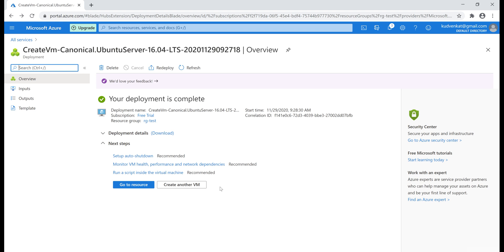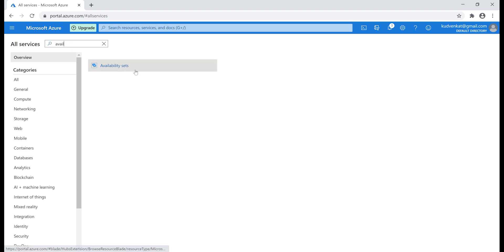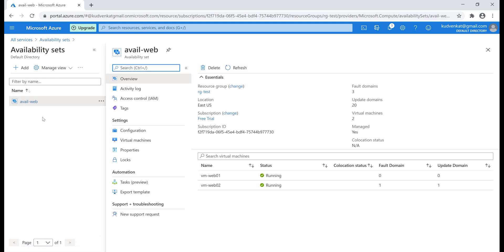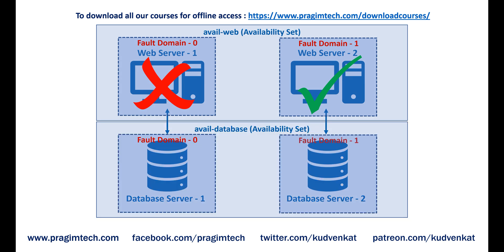Let's go to All Services and search for availability sets. If we go to our availability set, notice that both web servers are assigned different fault domains and update domains. If there is a problem in one fault domain or update domain, only one of our web servers will be down and we still have the other web server up and running. We can do the same for our database servers — create a separate availability set named avail-database, place both database servers in it, so they get their own fault domains and update domains. If a problem occurs in one fault domain or update domain, only one database server is down and the other remains operational.